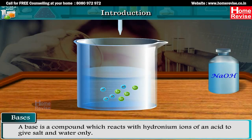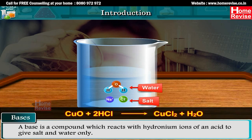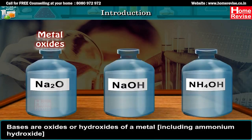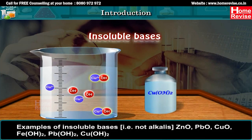A base is a compound which reacts with hydronium ions of an acid to give salt and water only. For example: CuO plus 2HCl gives CuCl2 plus H2O; Cu(OH)2 plus H2SO4 gives CuSO4 plus 2H2O. Bases are oxides or hydroxides of a metal, including ammonium hydroxide.